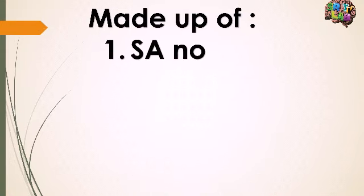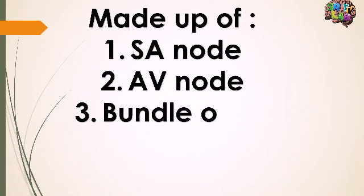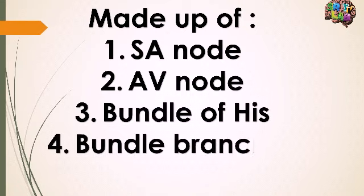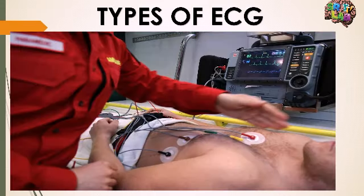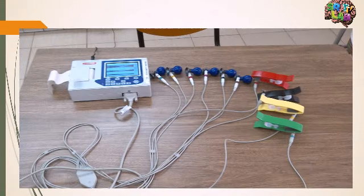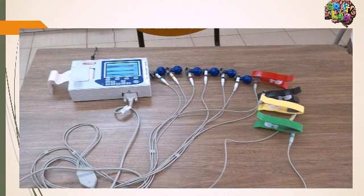The electrical system of the heart is made up of the SA node, AV node, bundle of His, bundle branches, and Purkinje fibers. There are different types of ECG: a fixed type found in hospitals or ambulances, and a portable type that is small and can be taken to a patient's home. ECG is not one machine — there are many types.